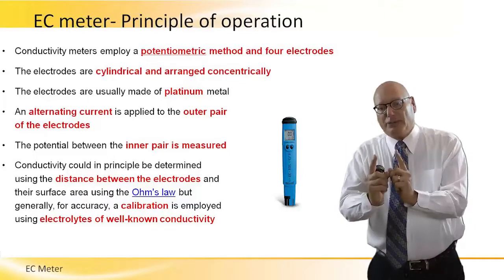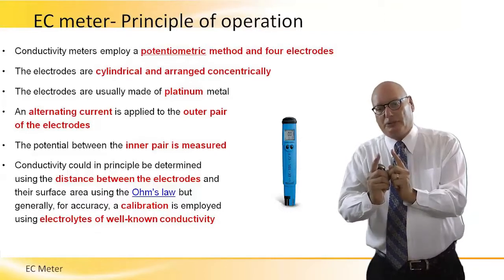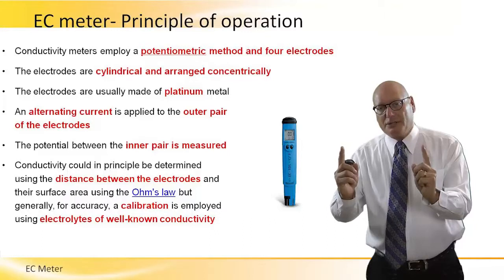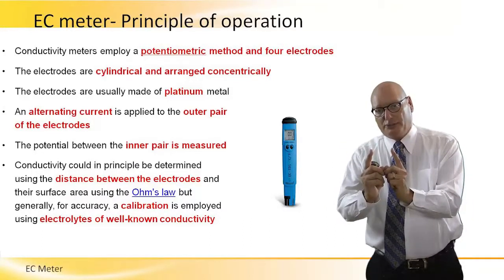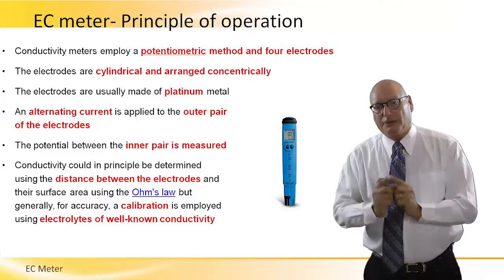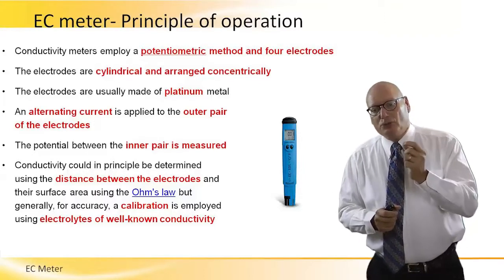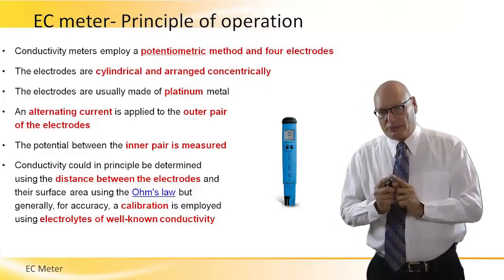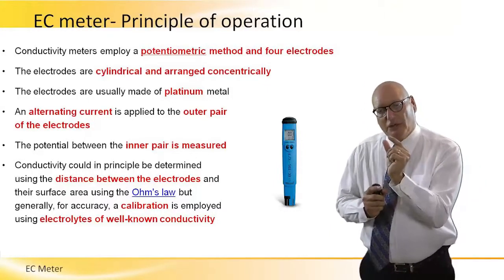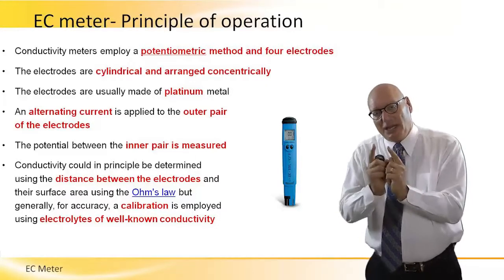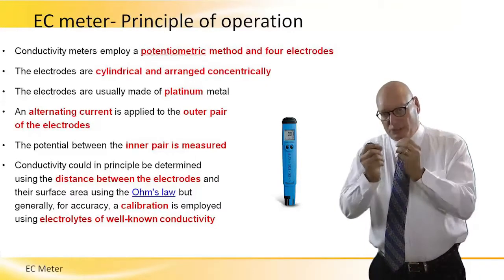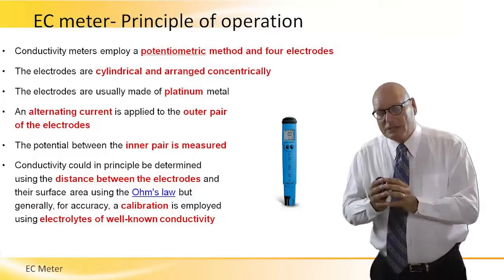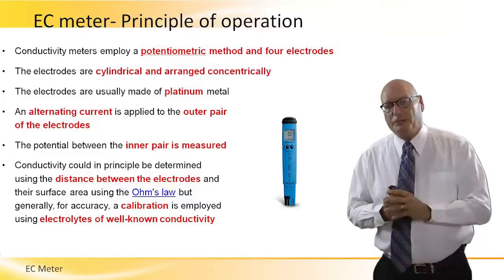The potential between the inner pair is measured. So we conduct AC power to the external pair, and we measure the potential difference in the inner pair. The conductivity should, in principle, be determined using the distance between the electrodes. There is a certain reference distance between the inner electrodes, which is actually used when we calibrate the device to measure the conductivity of the solution.